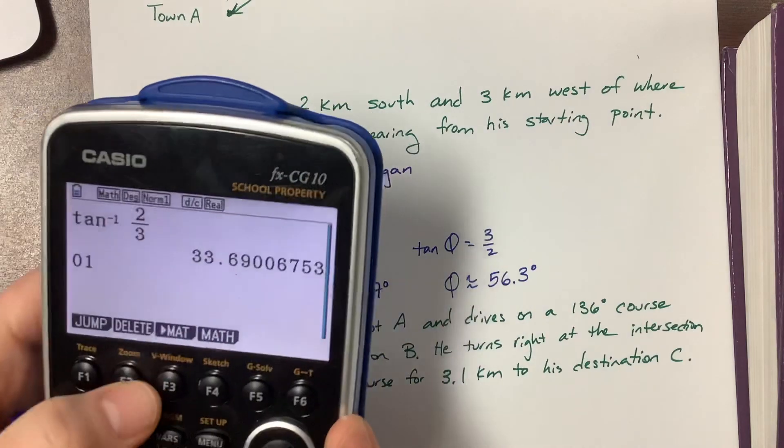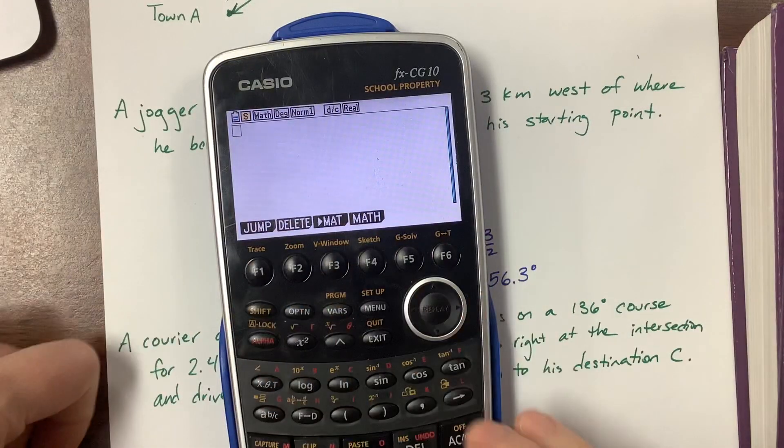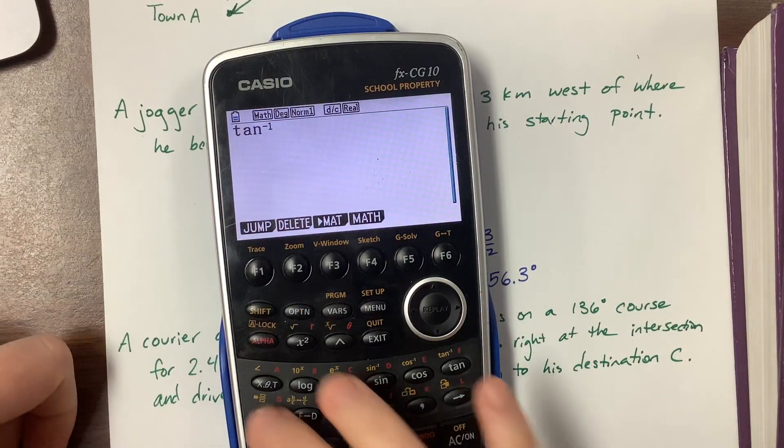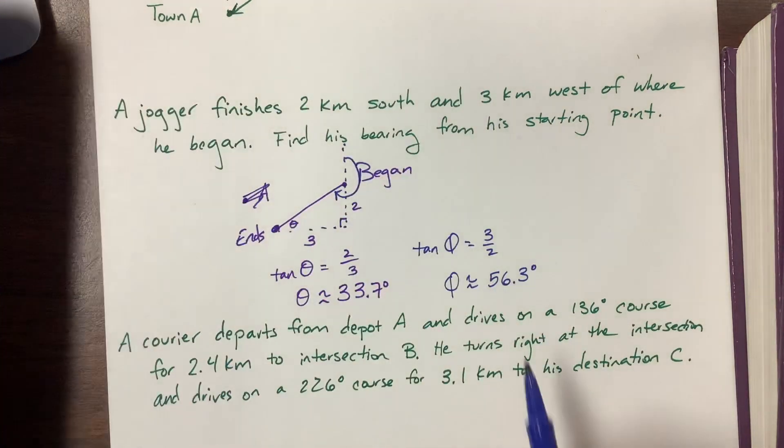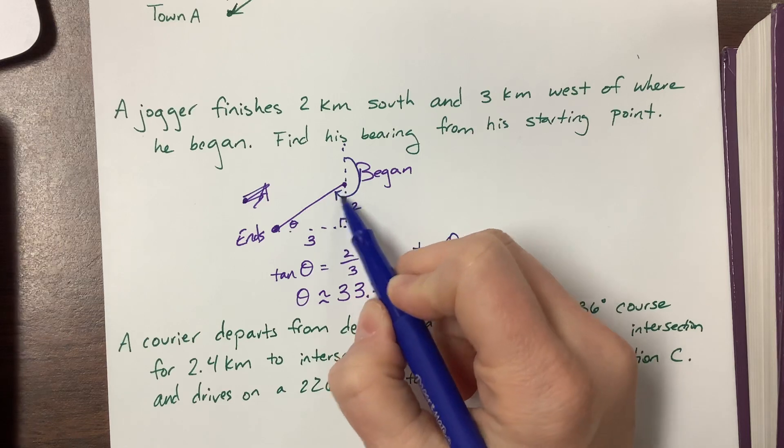Even without grabbing my calculator, I know that's going to be 90 minus this. So what is that? 56.3. And yes, the book rounded it to 56.3. I can verify by saying inverse tangent of 3 over 2. So now what happens is this little angle right in here is 56.3.